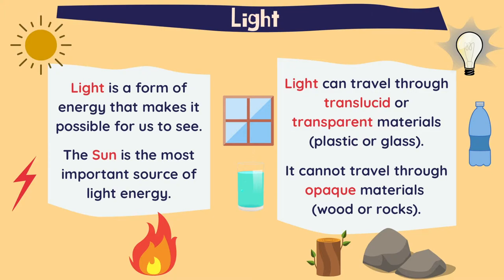Light can travel through translucent or transparent materials like plastic or glass. So we can see light through these materials like a window, a glass, or a bottle of water.